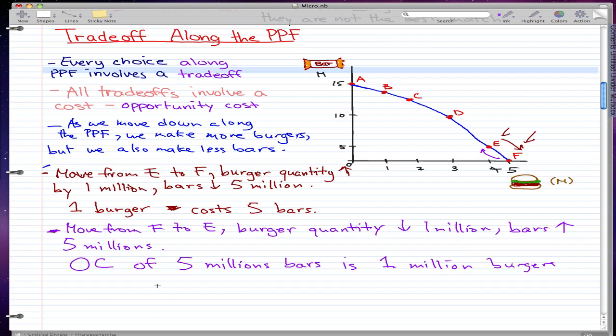Because if we divide, so 5 million bars cost 1 million burgers, and if we divide both sides by 5 million, that's pretty much saying that...